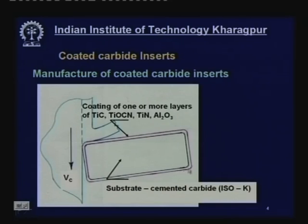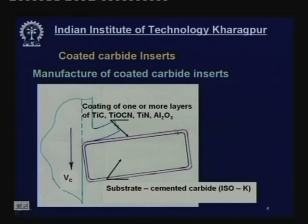This layer may be a single layer of a single material or it can be multi-layer — up to 13 layers one after another, starting from titanium carbide and ending with alumina or titanium aluminum nitride. The thin but uniform layer is 5 to 15 microns thick, uniformly distributed on the surface, deposited by CVD (chemical vapor deposition) or PVD (physical vapor deposition).